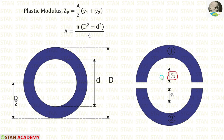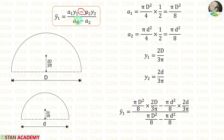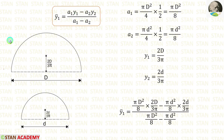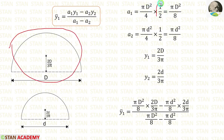Let us calculate y1 bar. The formula is a1 y1 minus a2 y2, by a1 minus a2. In this formula, we are subtracting because we are having some empty space. Here we are having two half circles — one inner half circle and one outer half circle. For the outer half circle, the area formula is pi D square by 4 into 1 by 2, because we are having a half circle and that is why we are dividing by 2.